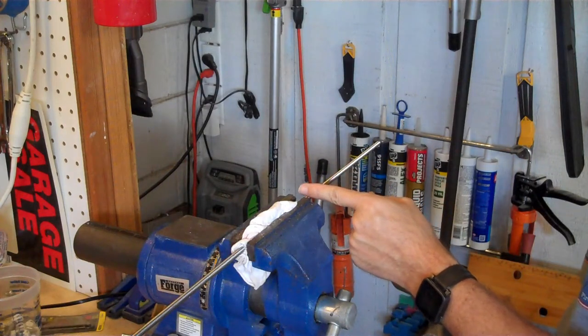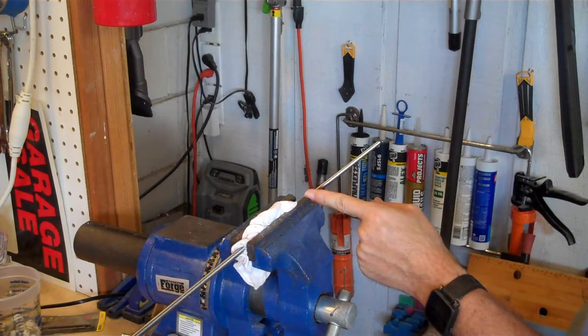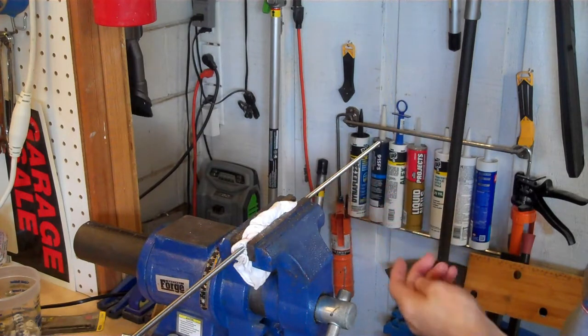When you cut a threaded rod, you're probably going to mess up the threads. So you need to follow them out with a die to clean them up.